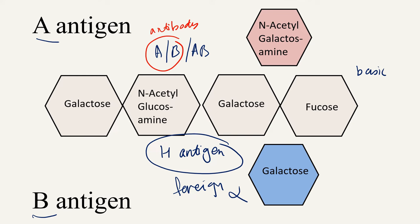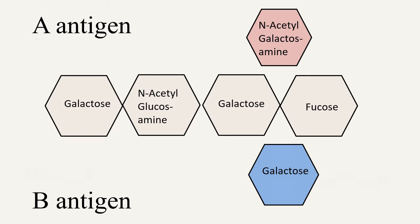The entire discussion of ABO blood grouping depends upon the presence or absence of either A or B antigens or their antibodies. For blood typing, we can use two types of sample: blood sample or serum sample.